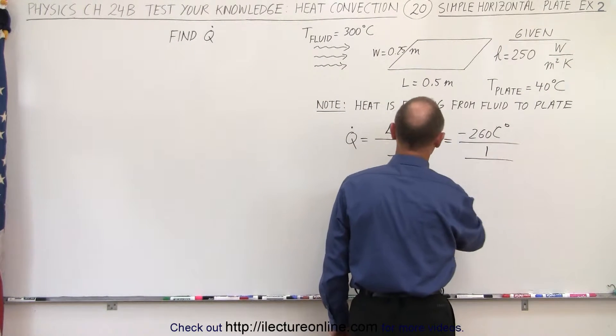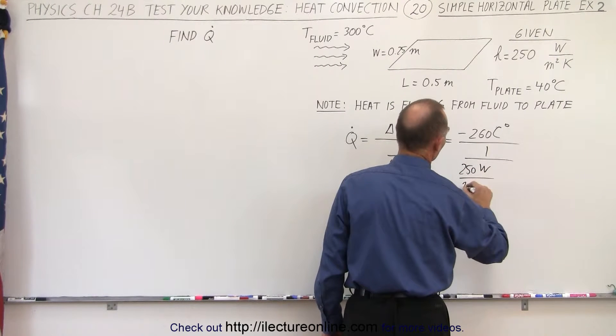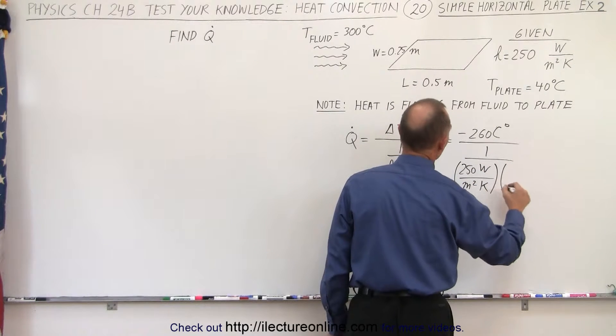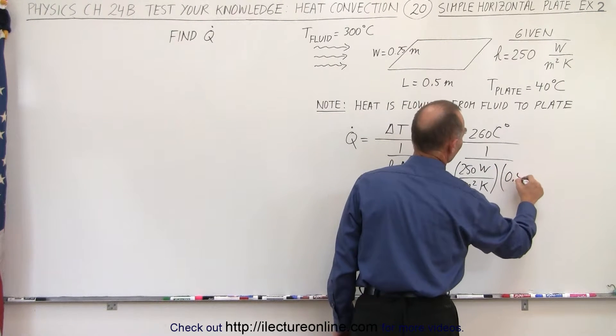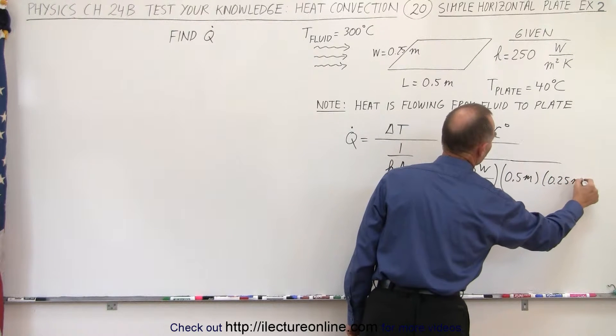We divide that by 1 over H would be 250 watts per square meter times Kelvin. And then we multiply that times an area of 0.5 meters and multiply it times 0.25 meters.